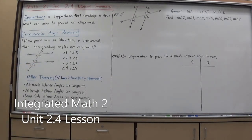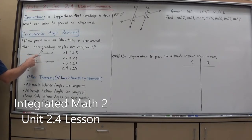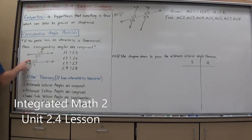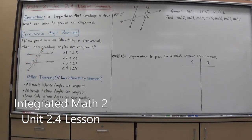This leads into many other theorems. We already know from previous sections that vertical angles are congruent, which means angle 1 is congruent to angle 4. Since angle 1 is congruent to angle 5 by the postulate, by the transitive property, angle 4 is congruent to angle 5. So we have alternate interior angles that are congruent. The same can happen with angles 3 and 6.